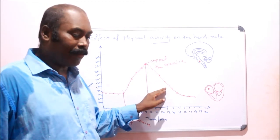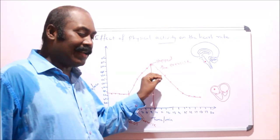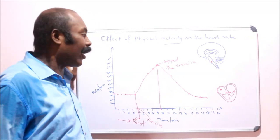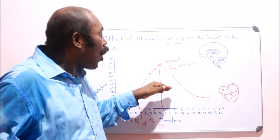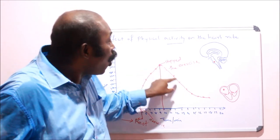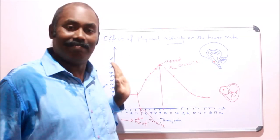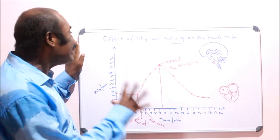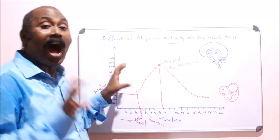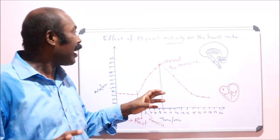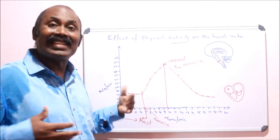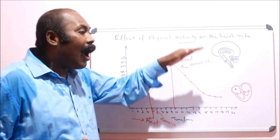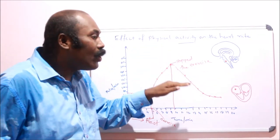People for whom it takes less time for the heartbeat to return to normal are very fit. Fit people take lesser time for the heartbeat to become normal, while unfit people take more time. During exercise the heartbeat goes very high, and when you rest it comes down slowly to normal. This activity shows how your heartbeat is affected by exercise.